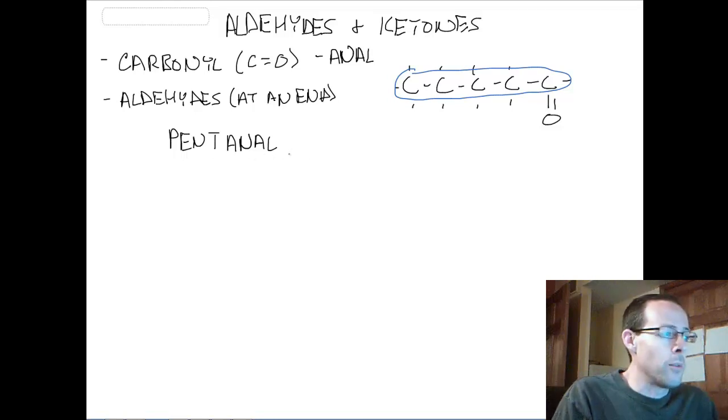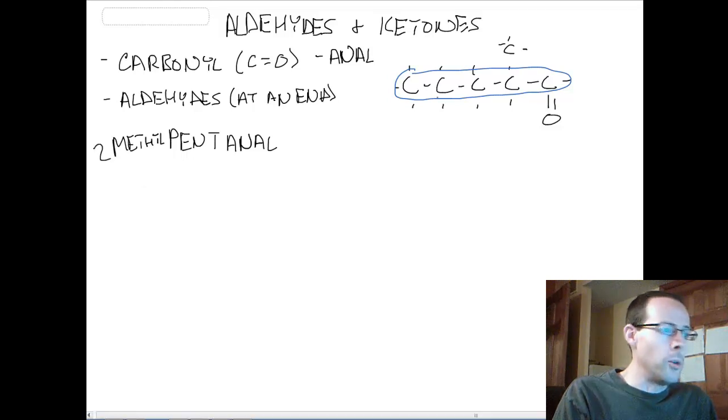We never use numbers with aldehydes because it's always on carbon number one. So if I were to have a methyl group right here, this would become methyl pentanal. And my methyl group would have to be on carbon number two.